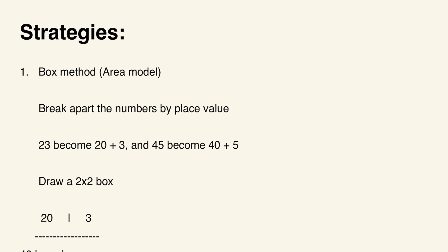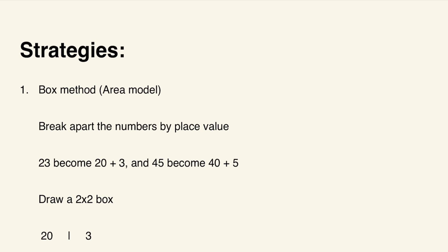Let's talk about some strategies for multi-digit multiplication. The first one is the box method, also known as the area model. The first step is to break apart the numbers by place value. For example, 23 becomes 20 plus 3, and 45 becomes 40 plus 5.